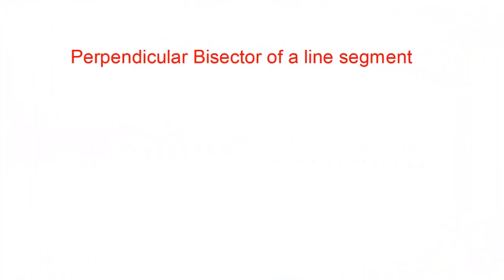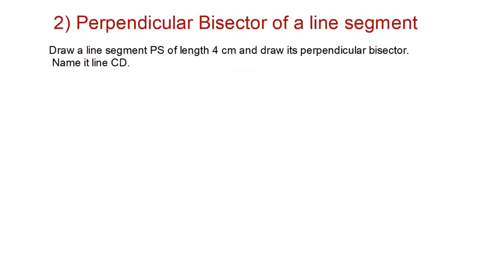Perpendicular bisector of a line segment means: a line segment perpendicular to and passing through the midpoint of a given segment is called the perpendicular bisector of that segment. To explain this concept, let us solve an example: draw a line segment PS of length 4 cm and draw its perpendicular bisector. Name it line CD.